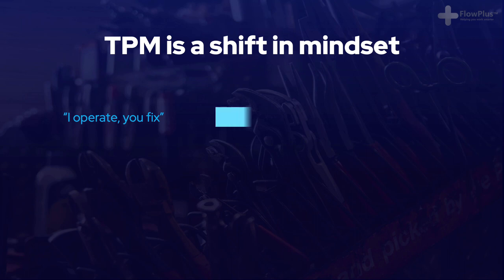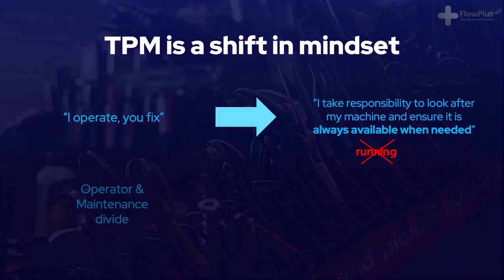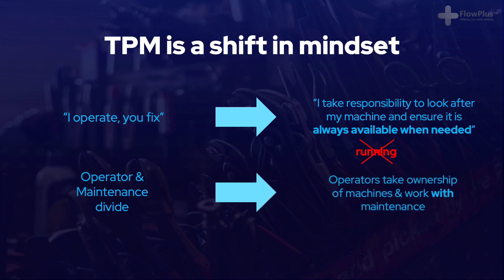TPM helps develop a collaborative continuous improvement culture where paradigms are broken and operators change from an 'I operate, you fix' attitude, to 'I take responsibility to look after my machine and ensure it is always available when needed.' Notice how it isn't about keeping the machine always running, as that would promote overproduction — the machine needs to just be available to produce whenever it is required. The principle behind TPM is that by operators taking ownership of their machines and keeping them in good working condition, the equipment will last much longer, break down less, and problems will be fixed before they escalate. Just like in 5S, the sustain aspect of TPM is extremely important.